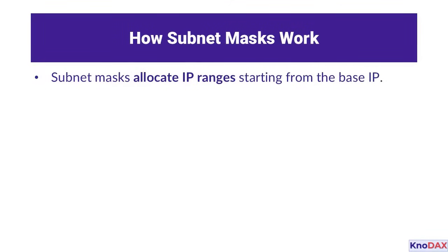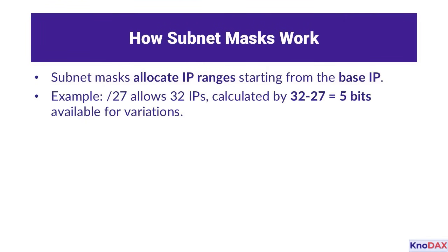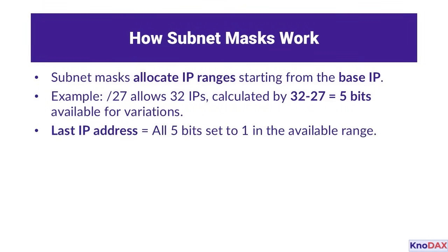Subnet masks play a crucial role in allocating IP ranges starting from a specified base IP address. For example, a /27 subnet mask allows 32 IP addresses in total. This is calculated by subtracting 27 from 32, giving us 5 bits available for variations. The final IP address in the range is determined by setting all 5 bits to 1 within the available space, marking the highest value in that range.